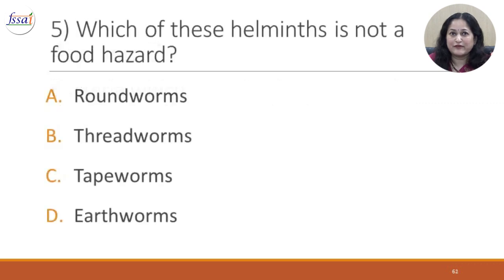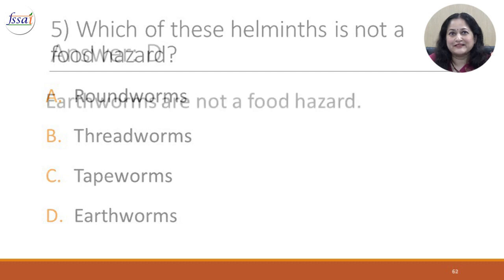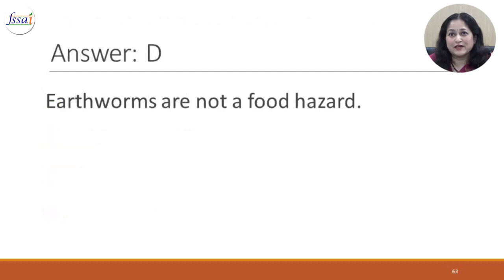Question 5: Which of these helminths is not a food hazard? A. Roundworms. B. Threadworms. C. Tapeworms. D. Earthworms. The correct answer is D, because earthworms are not a food hazard. They live in soil and do not enter our food.